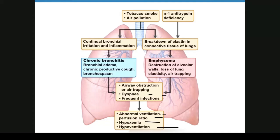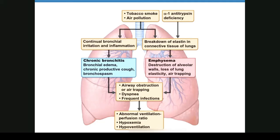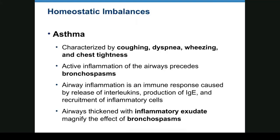Chronic bronchitis involves continual bronchial irritation and inflammation, bronchial edema, productive cough, and bronchospasm — all leading to air trapping, dyspnea, and frequent infections. Asthma causes coughing, dyspnea, wheezing, and chest tightness. Active inflammation precedes or is caused by bronchospasms — either way, you'll get both an inflammatory exudate and bronchospasms.